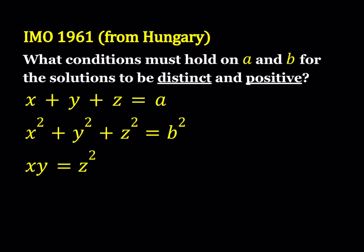Hello everyone. In this video we're going to be solving an IMO problem from 1961. This problem was proposed by Hungary. IMO is the International Math Olympiads which started in 1959. Roughly about 500 students, 6 from each country, participate every year. It's a very long test done in 2 days, taking 9 hours with 6 problems. This is one of the easiest questions on IMO and it's pretty manageable, so let's get started.